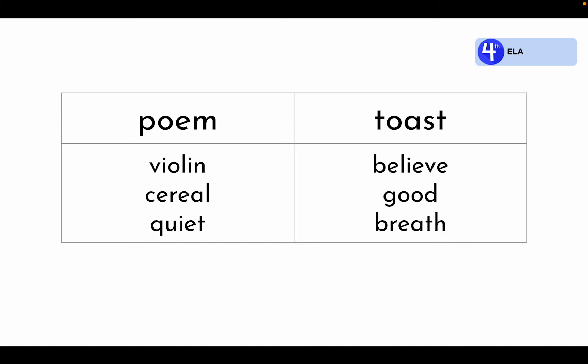Listen. Vi-o-lin. This word is a three-syllable word, but the first and second syllables break in between the i and o. The next word is cereal. Ce-re-al. It's also a three-syllable word, but the second and third syllable break comes in between the vowels e and a. Then we have the word quiet. Qui-et. This is a two-syllable word breaking in between the letters i and e. In this case, the vowel u is actually working together with the q to make the qu sound.